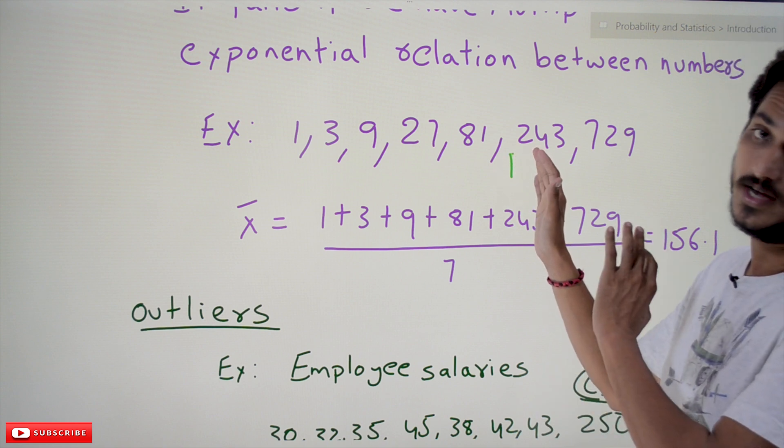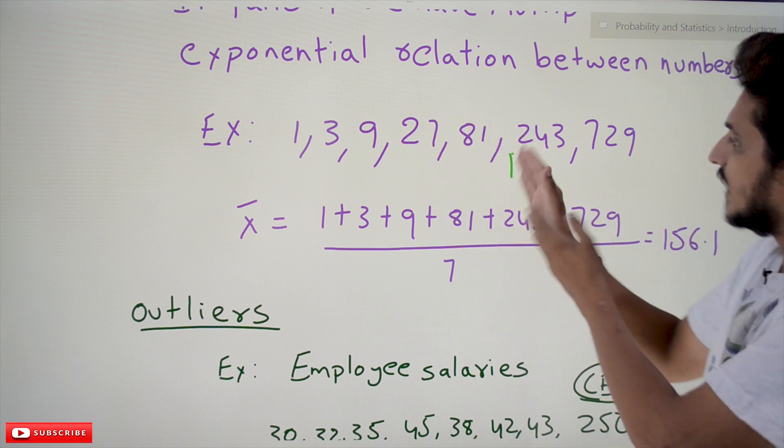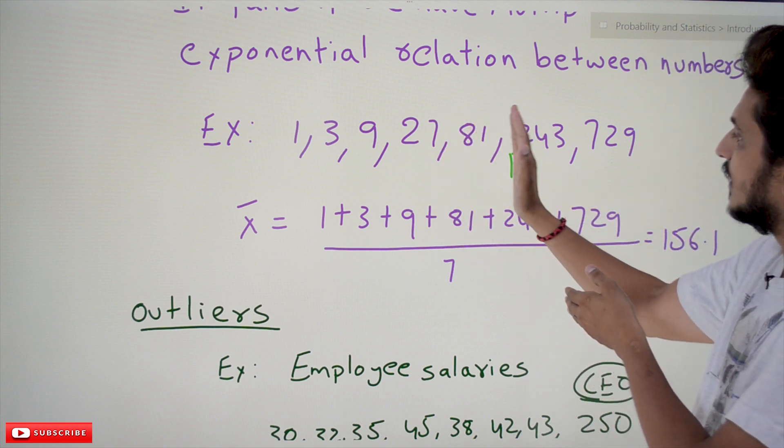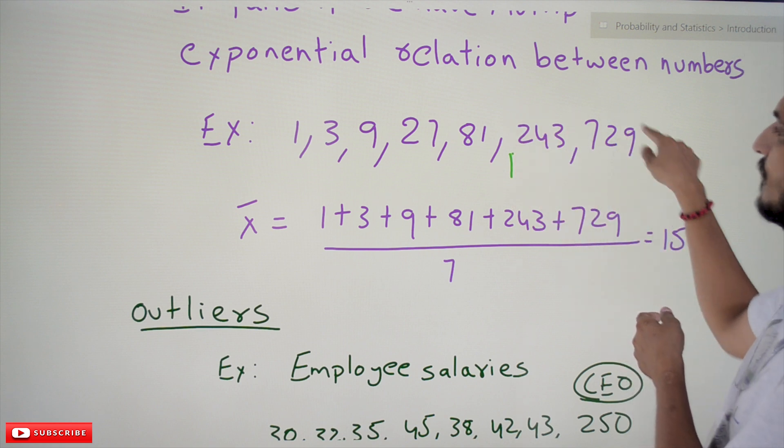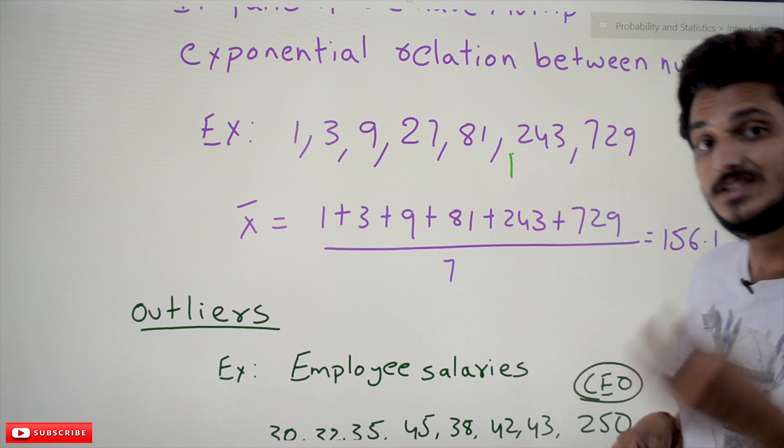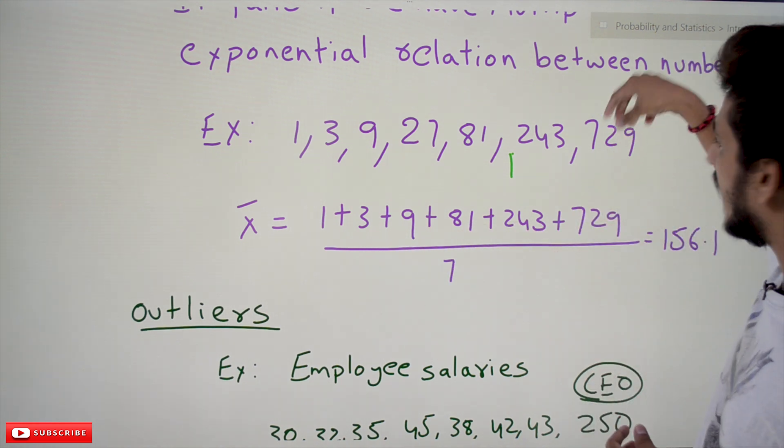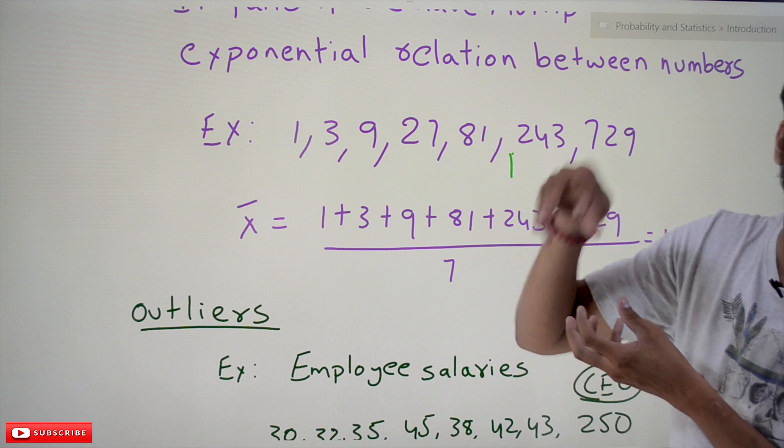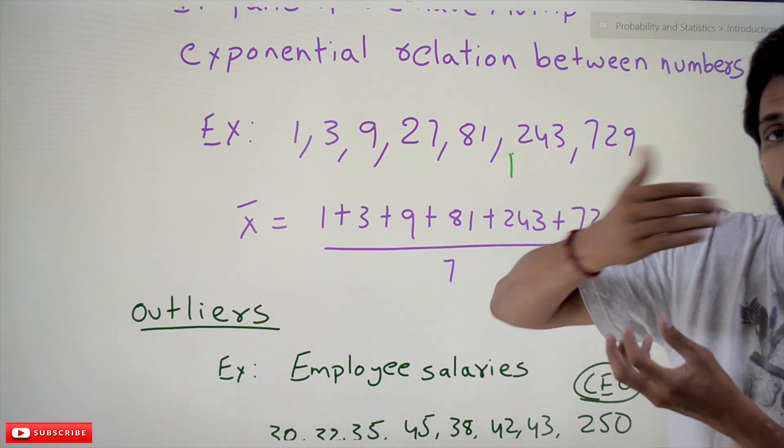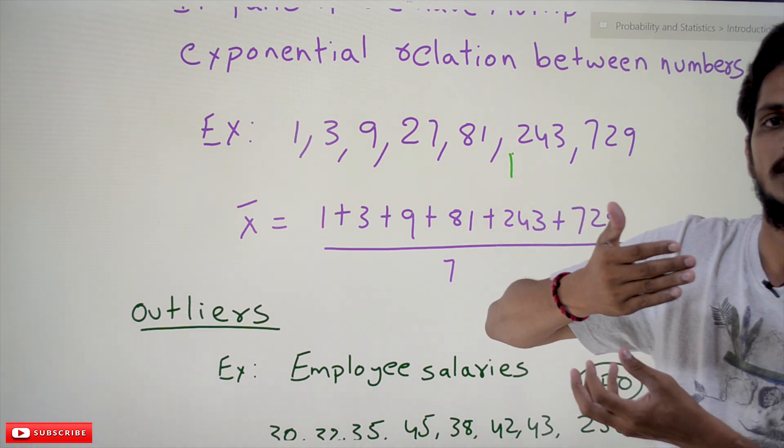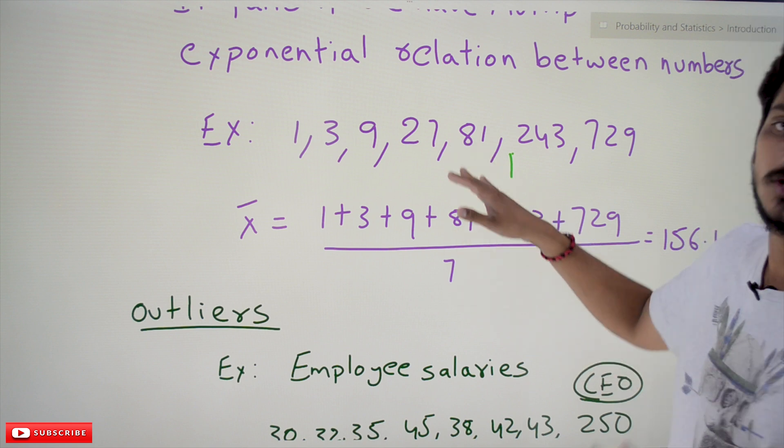See here, it is not going to identify the central value. The mean value is moving towards the large numbers because in the mean we are going to do addition, so these large values are impacting much on moving our mean value towards them.